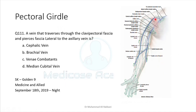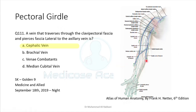The clavipectoral triangle has deltoid on one side, pectoralis major on another, and the clavicle on the third side. The cephalic vein pierces this fascia and enters from the lateral aspect of the axillary vein. The basilic vein is on the medial aspect of the arm, draining from the little finger, continuing on the medial aspect, then dipping into the deep fascia at the middle of the brachium before joining the axillary vein.